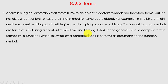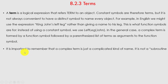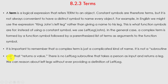This is what function symbols are for. Instead of using a constant symbol we use LeftLeg(John) to represent John's left leg. In general, a complex term is formed by a function symbol followed by a parenthesized list of terms as arguments. It is important to remember that a complex term is just a complicated kind of name — it is not a subroutine call that returns a value. There is no LeftLeg subroutine that takes a person as input and returns a leg.